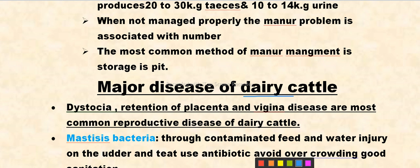Dystocia and retention of placenta and vaginal irritation are the most common reproductive diseases of dairy cattle.